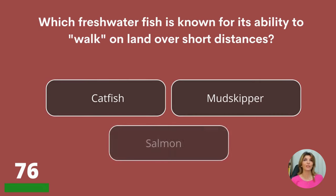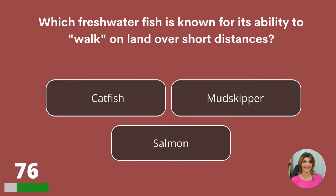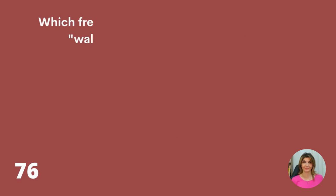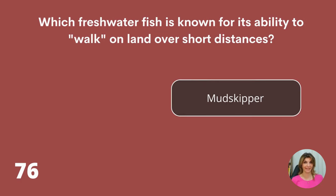Which freshwater fish is known for its ability to walk on land over short distances? Catfish, mudskipper, or salmon? Mudskipper.